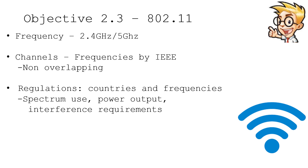These regulations often dictate exactly which frequencies should be used. They specify the maximum amount of power that can be used on those networks, and they set requirements and limits over how much interference can be caused by these 802.11 networks.